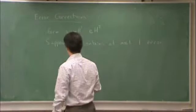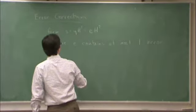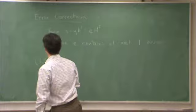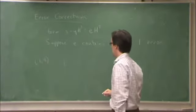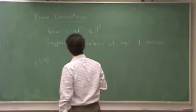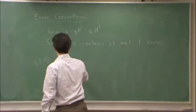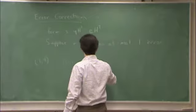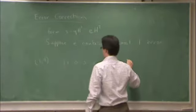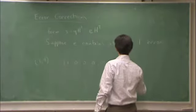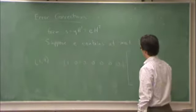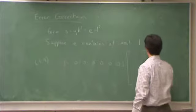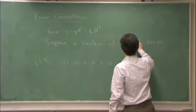So in other words, let's just have as an example, 7-4 code. So I have e is a 1 by 7 vector and let's say the first element is in error. Now h is, h transpose, excuse me, has n rows and n minus k columns.